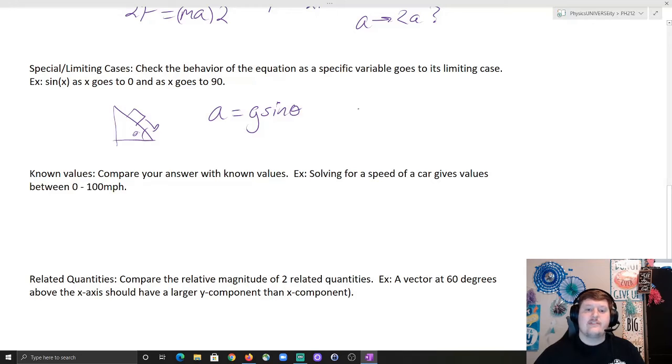So if I pick my angle, a equals g sine theta is a common answer. So, if I know that my angle goes to 90, then I would expect something specific. If my angle goes to zero, I would expect something specific as well. Dropping something straight down, I would expect a to equal 9.8 meters per second squared, just gravity. And if it's flat, I would expect a to equal zero, which can be given by the sine function.